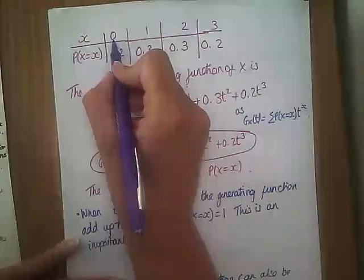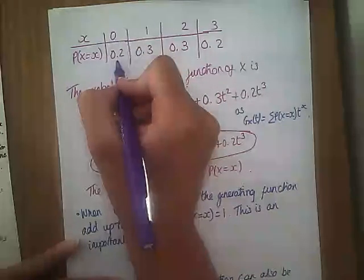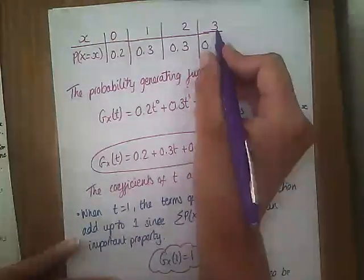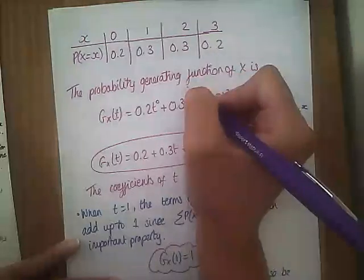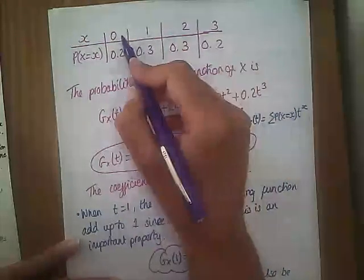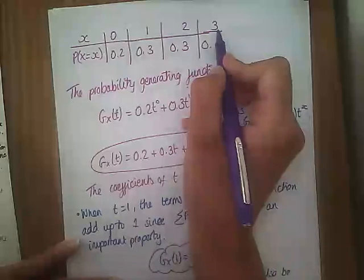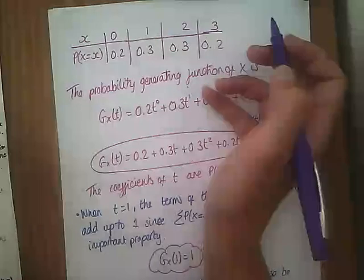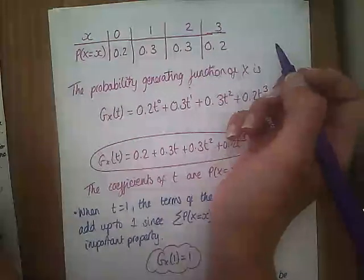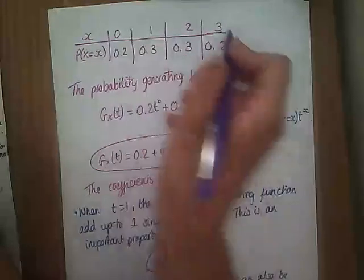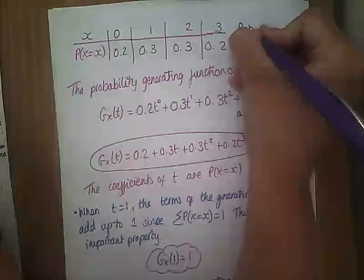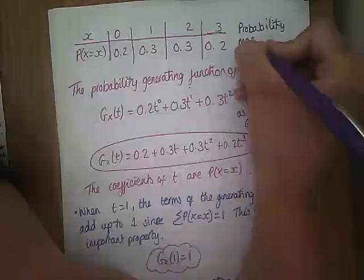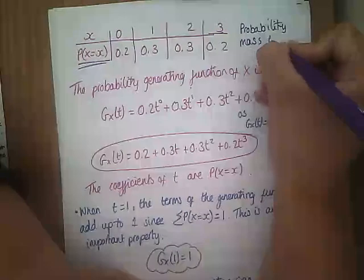So the probability of getting zero is 0.2, probability of one is 0.3, probability of two is 0.3, and the probability of three sixes is 0.2. This means I must only roll the dice three times, and the maximum number of sixes I can get is three. This is what we call a probability mass function — it gives us our probabilities that X equals x.